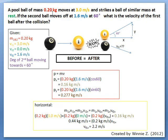A pool ball of mass 0.2 kg moves at 3 m per second and strikes a ball of similar mass at rest. If the second ball moves at 1.6 m per second at 60 degrees, what is the velocity of the first ball after the collision?